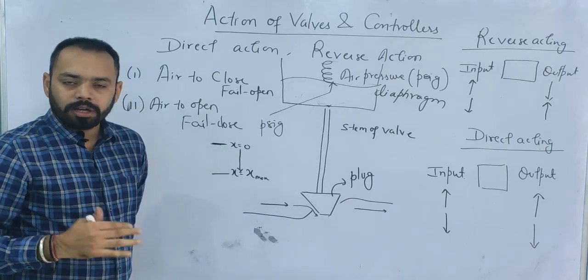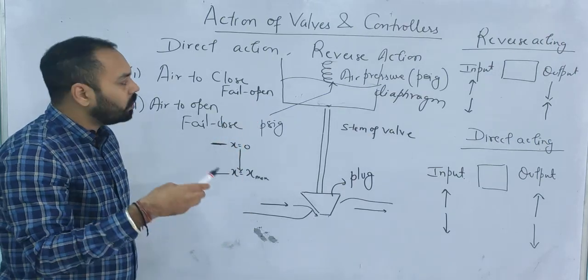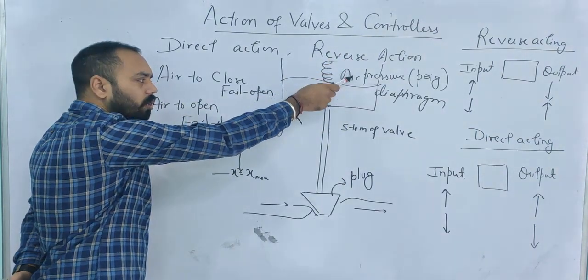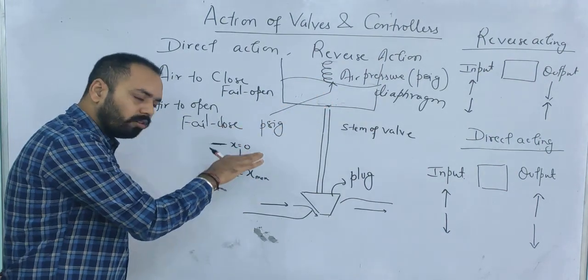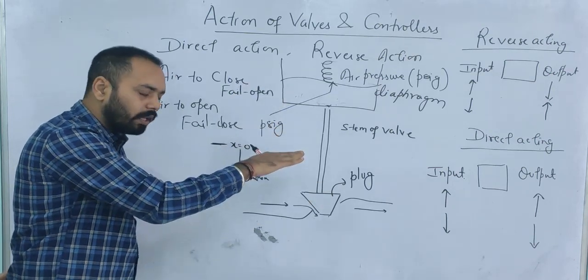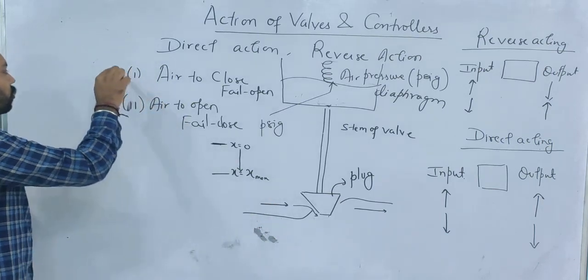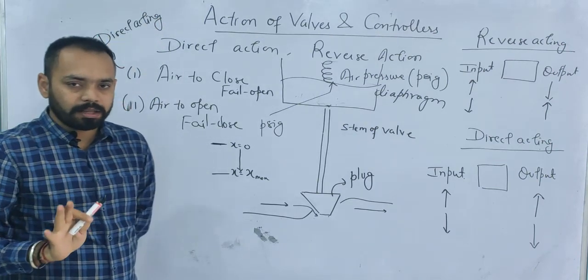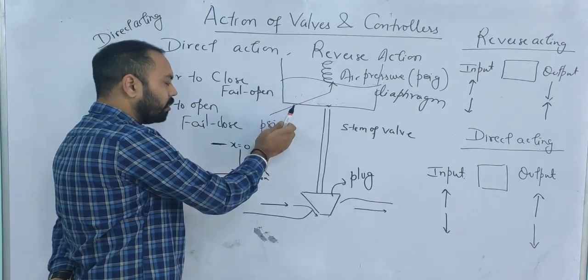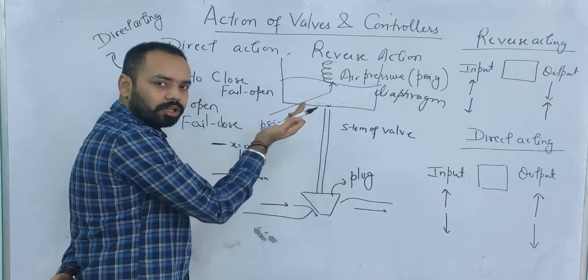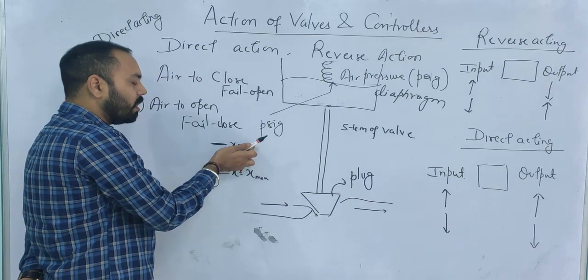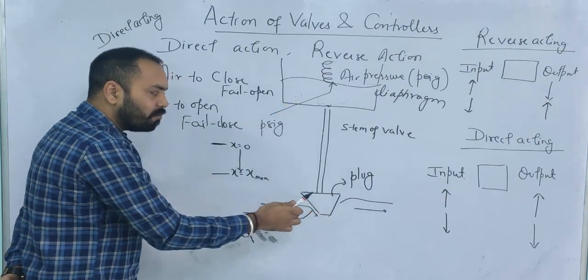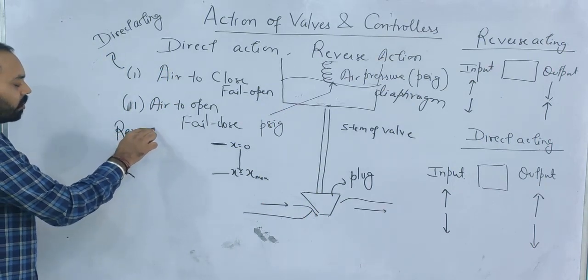Now apply this to the air-to-close valve: the spring is below and the signal comes from the top. As air pressure increases, the stem moves downward — in the positive direction. So air pressure increases and stem movement increases. Therefore, the air-to-close valve is called a direct acting valve. Similarly, for air-to-open, as air pressure increases, the stem moves from x-max to x-zero — the negative direction — so stem movement decreases. Therefore, the air-to-open valve is called a reverse acting valve.